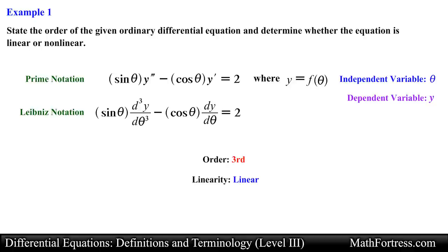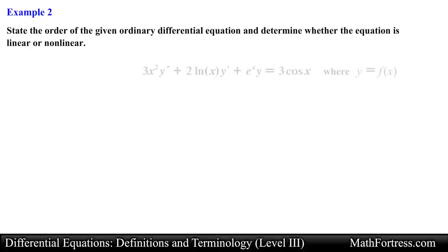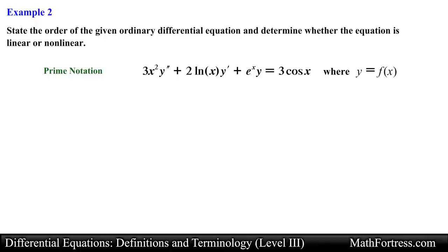So this equation can be classified as a third order linear ODE. Moving to the next example: 3x squared times y double prime plus 2 times the natural log of x times y prime plus e to the x times y equals 3 times cosine of x, where y is a function of x. We have another ODE written in prime notation, with independent variable x and dependent variable y.